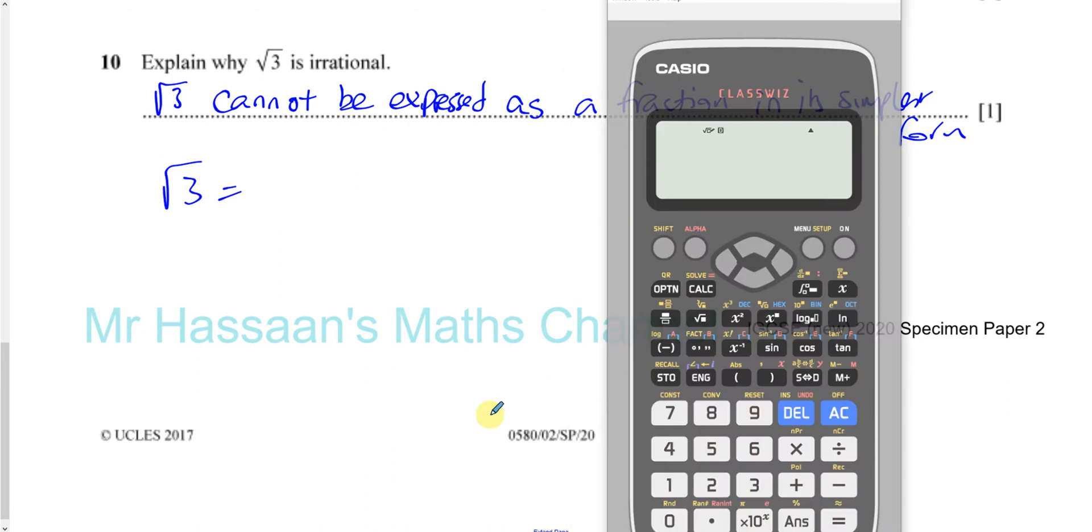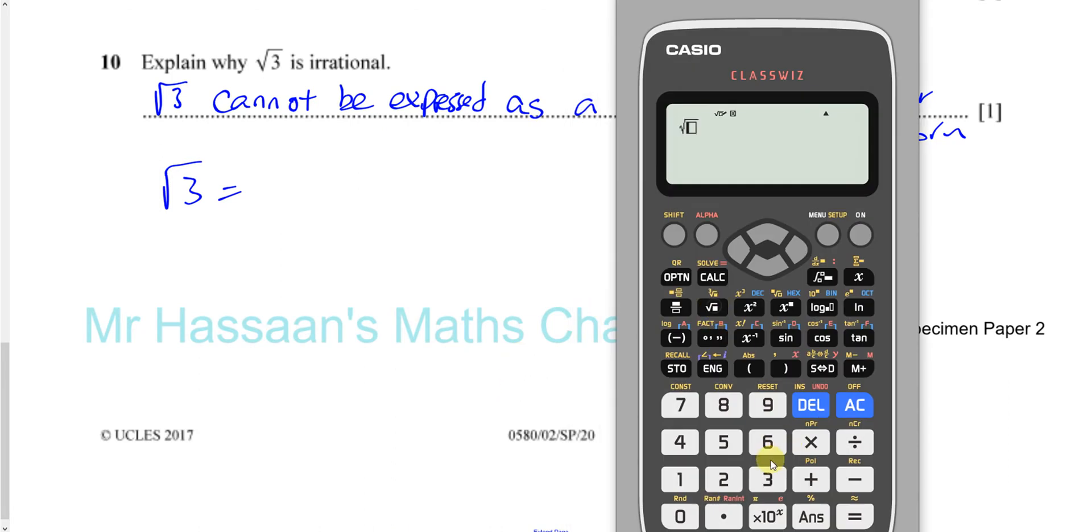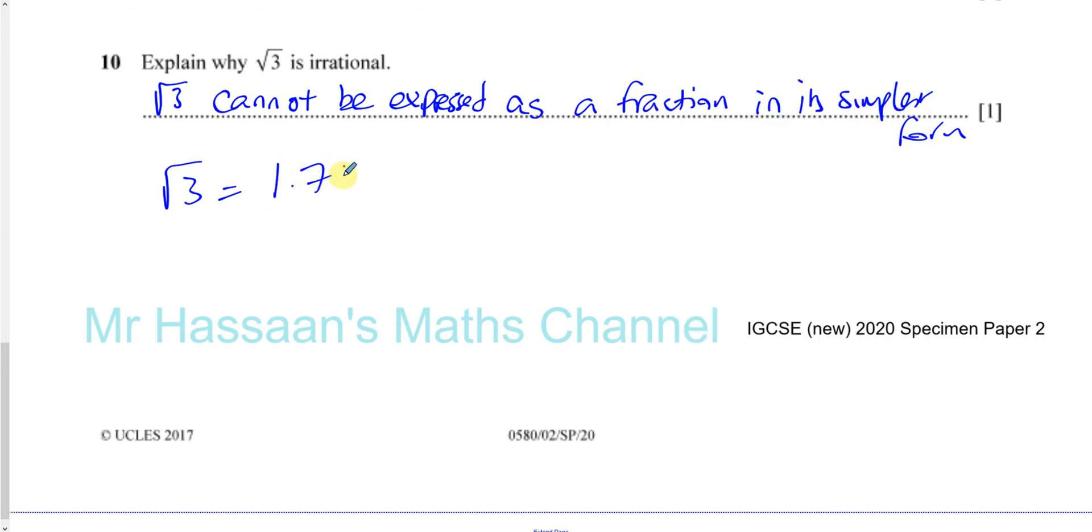If you try to find the square root of 3 and you put the number in your calculator, it's going to give you an answer which continues on and on. And it would continue on without any pattern to it. There's no pattern to the way it continues.